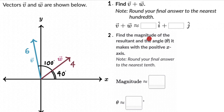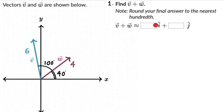Hopefully you have given this a shot. Let me hide the second part for now — we'll come to the magnitude and angle later. Let's just focus on part one: adding vector v and vector w using the component method.